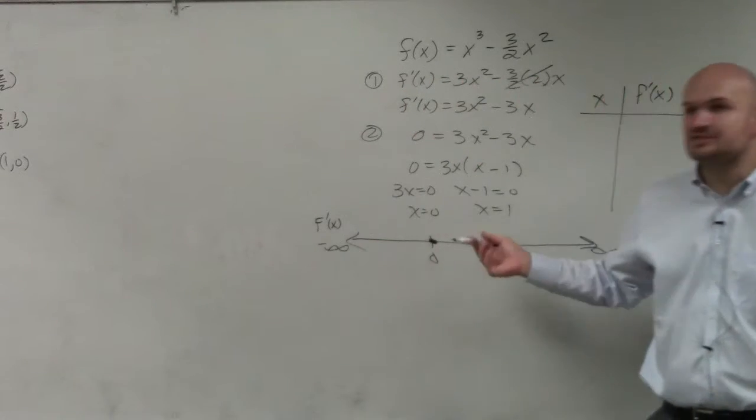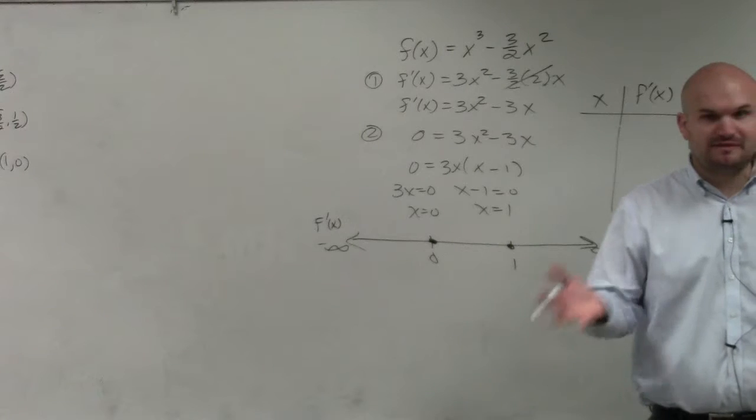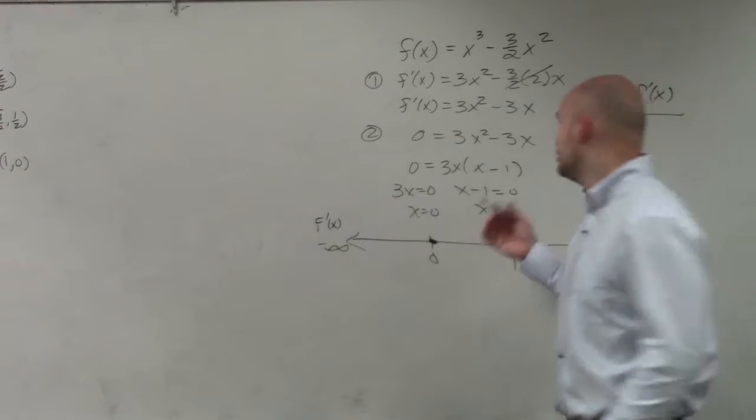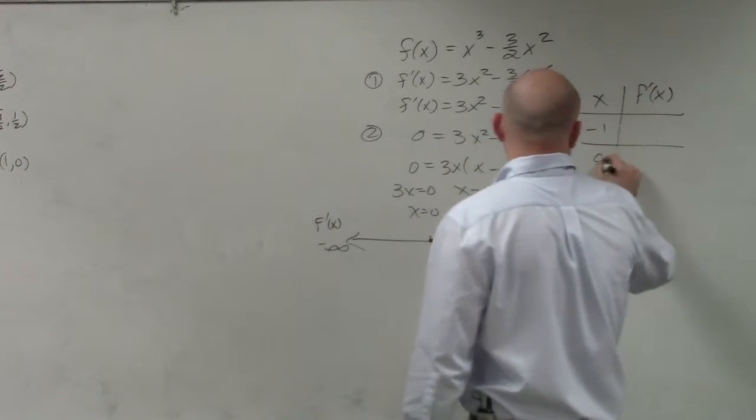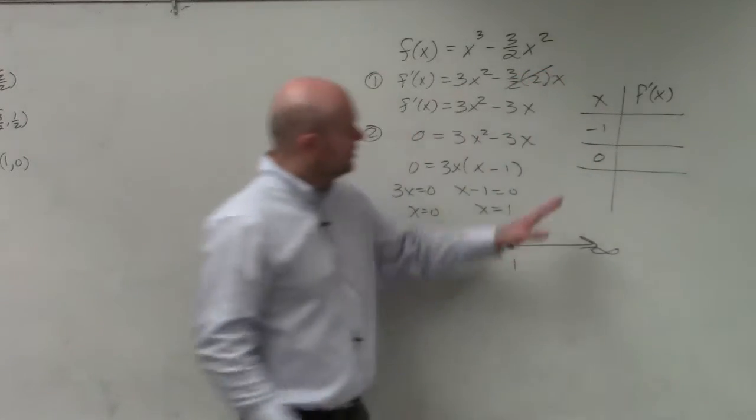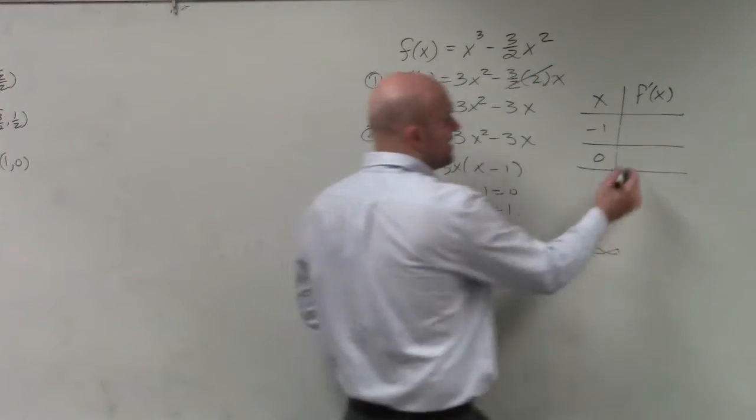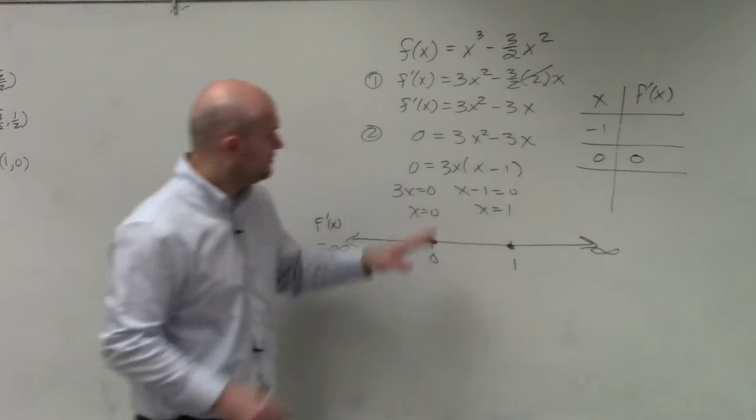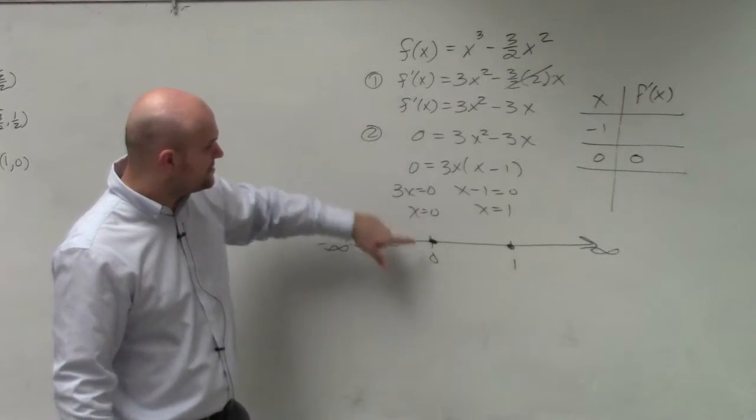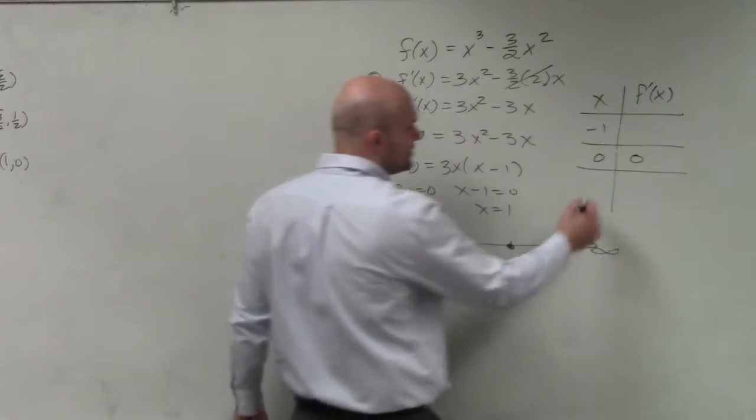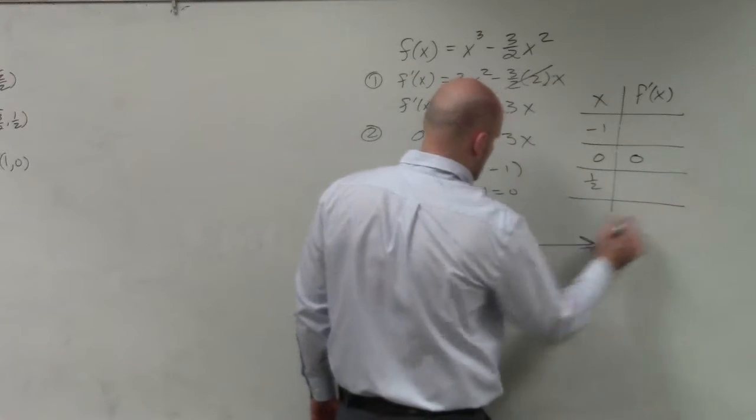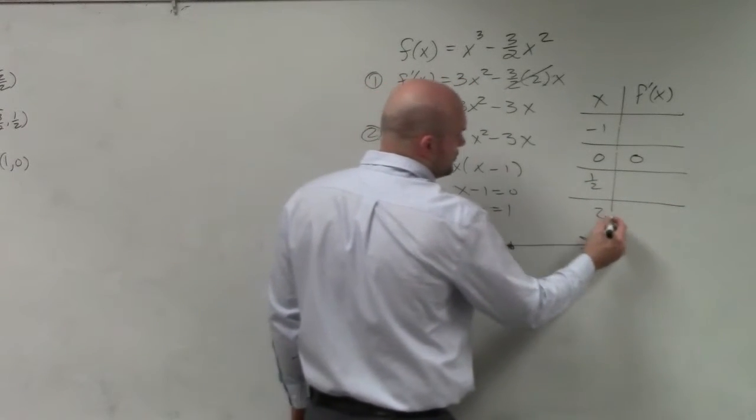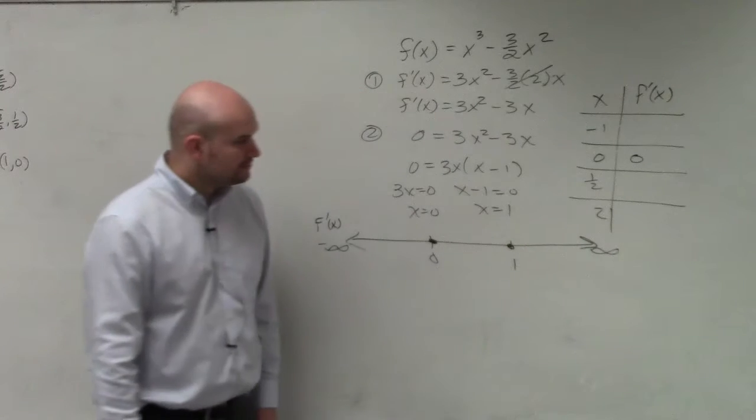So between negative infinity and zero, we need to pick a value to determine if it's positive or negative. And probably a good number to be simple, I would say it would be negative one. At zero, we know that at zero, f prime has to be equal to zero, right? Because that's how we found those values. I need to pick a value in between zero and one, so I'll pick one half. And then I need to pick a value after there, so I'll pick two.